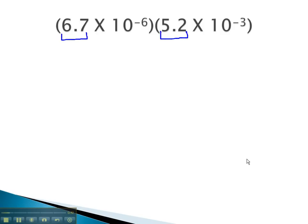6.7 times 5.2 on the calculator gives us 34.84. We also know that we can use our exponent properties to combine the tens together. We can do that by adding the exponents, negative 3 and negative 6. This gives us negative 9.